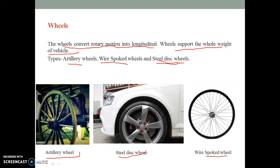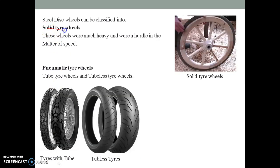With regard to the type of tire, these wheels can be classified into some categories. These categories are solid tire wheels and pneumatic tire wheels. What are the solid tire wheels? In early vehicles, solid tire wheels were used. Solid rubber tire was mounted over the rim of the wheel. These wheels were much heavy and were a hurdle in the matter of the speed as it is shown in the picture. This is the general diagram or the picture of the wheel. Different kinds of wheels in different sizes were in use. Those are called solid tire wheels.